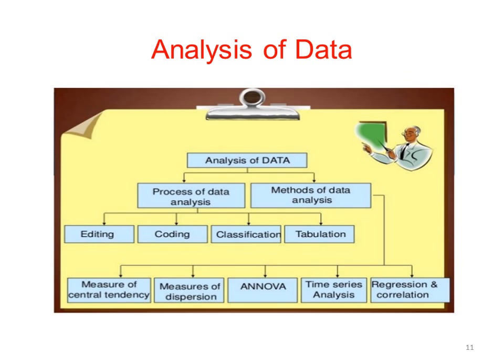The process of data analysis has four steps: editing, coding, classification, and tabulation. The methods of data analysis include measures of central tendency, measures of dispersion, ANOVA, time series analysis, and regression and correlation. The first section covers theory and the second section covers problems.